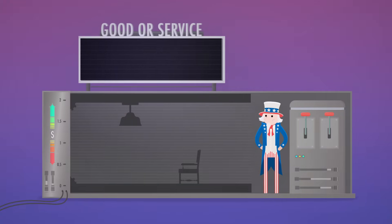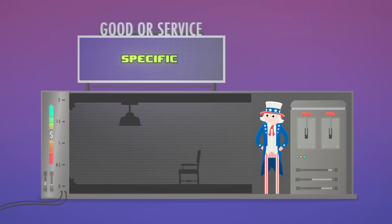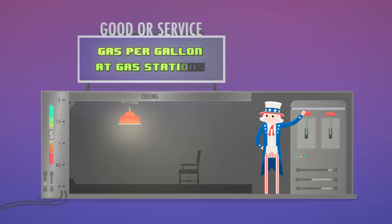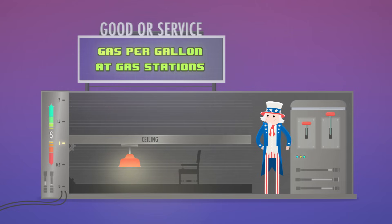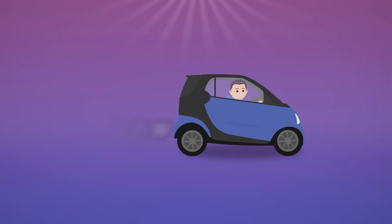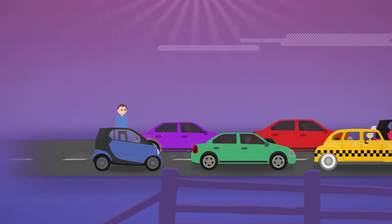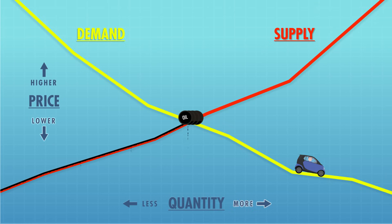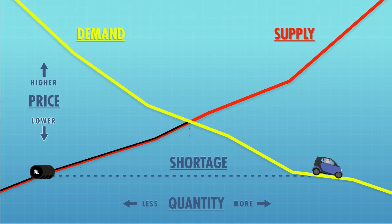When the government sets a maximum price for a specific good or service, that's a price ceiling. Let's say the government forced gas stations to charge a dollar per gallon for gas. This might seem like a good idea, but mandated lower gas prices mean society is actually made worse off. When gas prices fall, consumers will want to buy more, but producers will no longer find it profitable to sell gas. The lower price will decrease the amount of gasoline produced, and we've got a shortage.